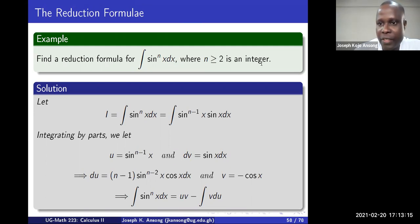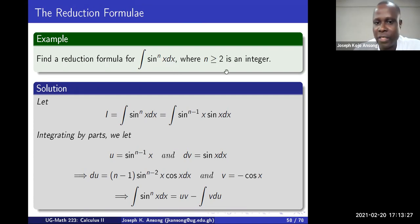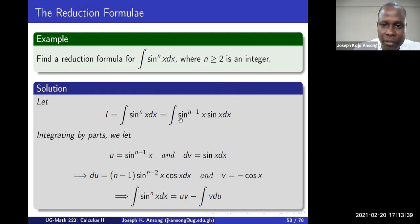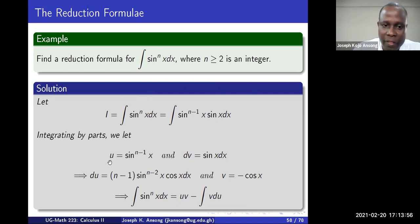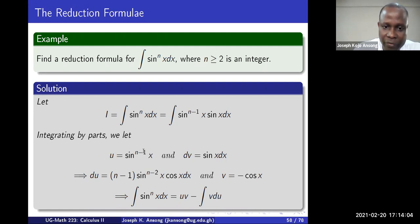Let's find a reduction formula for the integral of sin^n(x) dx, where n ≥ 2 is an integer. To derive it, split sin^n(x) as sin^(n-1)(x) · sin(x) dx and apply integration by parts. Let u = sin^(n-1)(x) and dv = sin(x) dx. Then du = (n-1) sin^(n-2)(x) cos(x) dx — by the chain rule — and v = -cos(x).